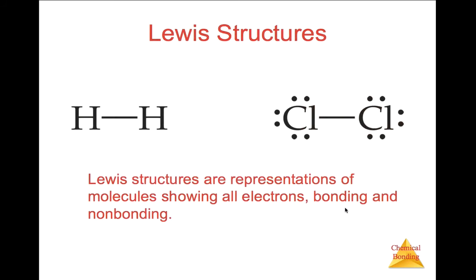We can represent covalent bonds using something called Lewis dot structures. Lewis structures are representations of molecules showing all electrons — bonding and non-bonding. A dash represents a pair of electrons shared between two atoms, and dots represent electrons that are not shared between the two, called non-bonded electrons.